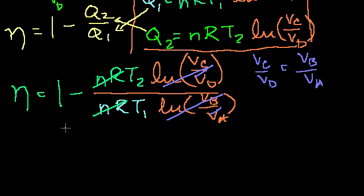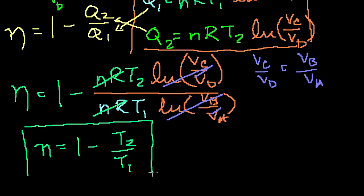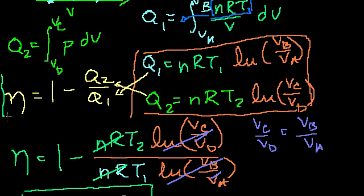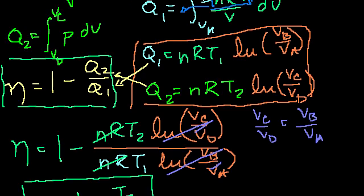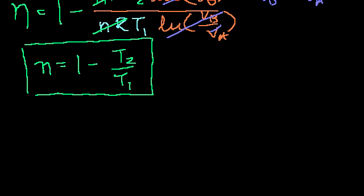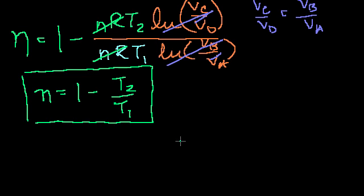We're left with the fact that efficiency can also be written as 1 minus T2 over T1 for a Carnot engine. Remember, this time, what we did over here, this applied to any engine. This was just a little bit of math and the definition of what work is and, well, I won't go too much into it right now. But this is for a Carnot engine, right? Because we did a little bit of work here that involved the Carnot cycle.